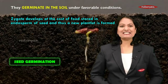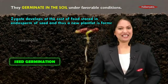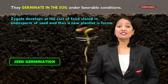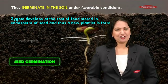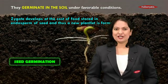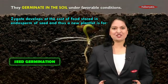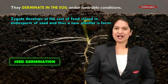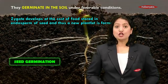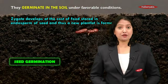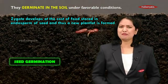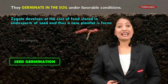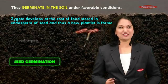This is called seed germination and reproduction, and this is how plants reproduce in nature. With this interesting information, we complete the part of reproduction in plants. To see reproduction in animals, especially human beings, we will go to the next part of our chapter.